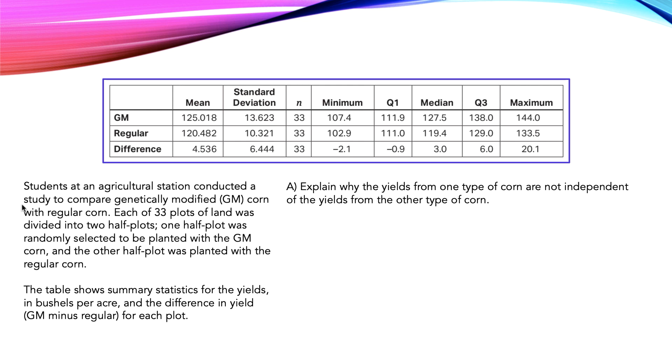In this question, students at an agricultural station conducted a study to compare genetically modified corn with regular corn. Each of 33 plots of land was divided into two half plots. One half plot was randomly selected to be planted with the GM corn and the other half was planted with the regular corn. The table shows summary statistics for the yields in bushels per acre and the difference in yield for each plot.